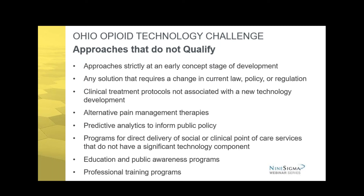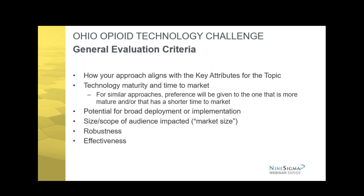This slide compiles the general evaluation criteria applied to all topics in the challenge phase. How does your approach align with the key attributes for the topic? With each topic, there are specific key attributes you need to accommodate. What is the technology maturity and time to market? For similar approaches, preference will be given to the one that is more mature or has a shorter time to market. What is the potential for broad deployment or implementation? What is the size or scope of the audience impacted — the so-called market size? How robust and effective is your approach? These are all criteria against which the third-party judging team will evaluate your submission.